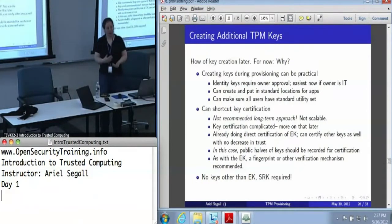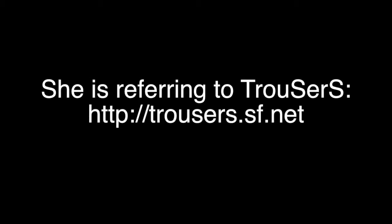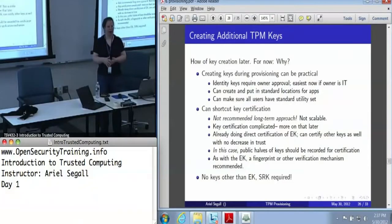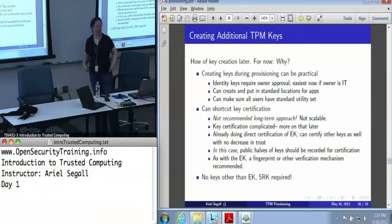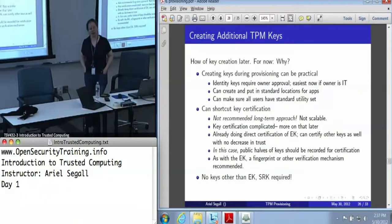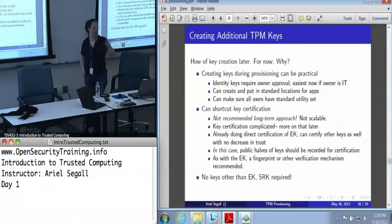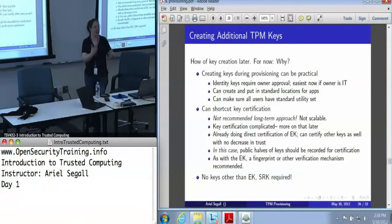On Linux, there is a TPM tools package that came out of IBM. I seem to recall hearing a rumor a couple months ago that it might have been abandoned, that somebody would need to pick it up because IBM may have decided that they're done. I hope not, because it's the most useful TPM utility set that exists, though it's not comprehensive. It does not support attestation very well, so it doesn't let you create identity keys. Most of its purpose was things like supporting Thunderbird with key storage protection, so it might let you create signing keys and storage keys.